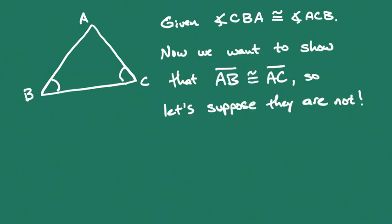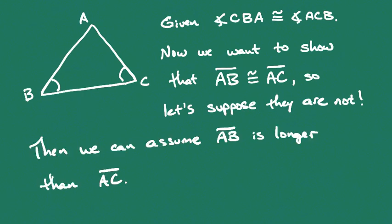Now we want to show that sides AB and AC are going to be congruent. As part of our proof by contradiction, we want to suppose that just the opposite is true — that segment AB is not congruent to segment AC. If they're not the same size, one of them has to be bigger than the other. Without loss of generality, we can assume that segment AB is the longer one, so AB is longer than AC.